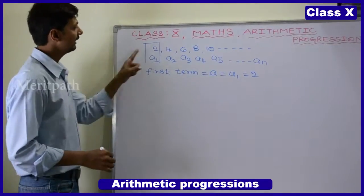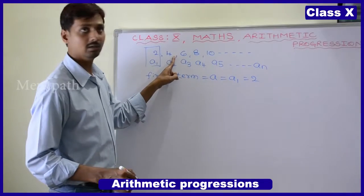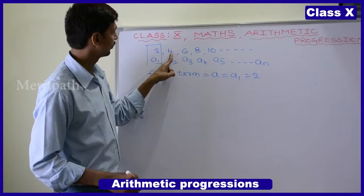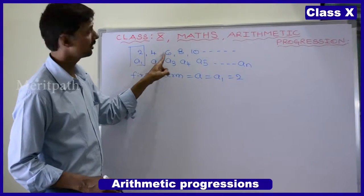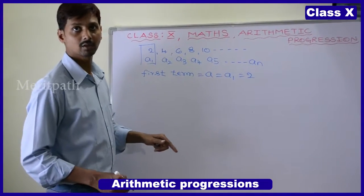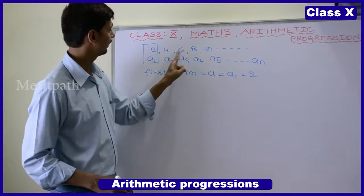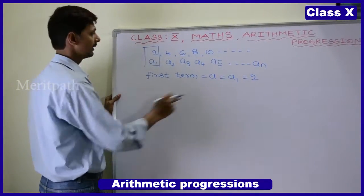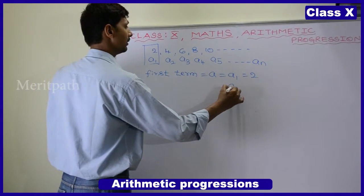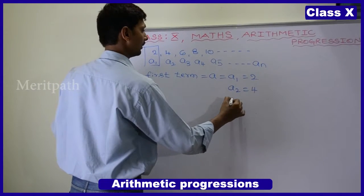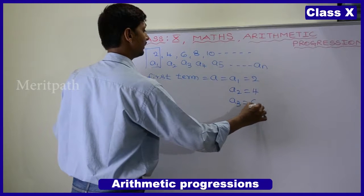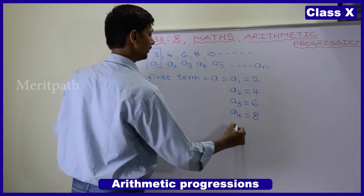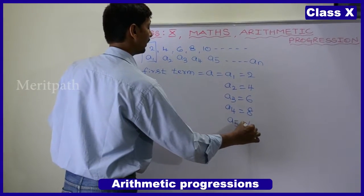We can observe that it is following a rule. The difference between the two numbers is 2, and the difference between each pair of numbers is also 2. So this is called a sequence. In this sequence, the first term a1 is 2, second term a2 is 4, third term a3 is 6, fourth term a4 is 8, fifth term a5 is 10.